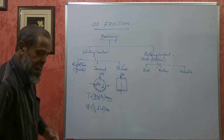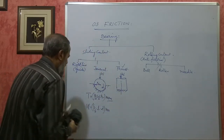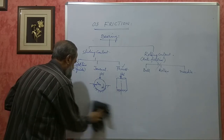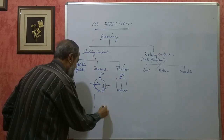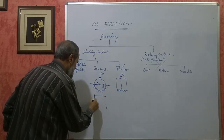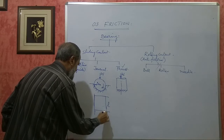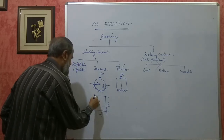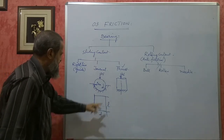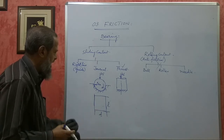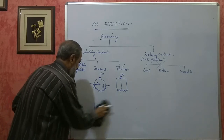Generally no problem will be asked on journal bearing — only theory can be asked. The bearing area is a rectangle of length L and diameter D of the shaft. Bearing pressure multiplied by bearing area gives the load. So W = Pb × L × D for calculating the load.